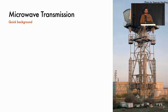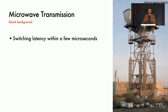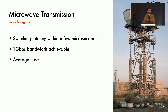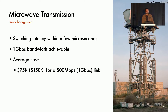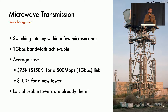Let's do a quick background on microwave transmission. Microwave towers have been around since the 60s, but since then, both the technology and the applications have changed a lot. Switching latency has been brought down to a few microseconds. Bandwidths of around 1 Gbps are now achievable over long distances. Costs of setting up a tower vary widely across locations, but on a rough average, it costs around $75,000 to set up a 500 Mbps link on an existing tower. The average cost for setting up a new tower is $100,000, but the good news is that lots of usable towers already exist.